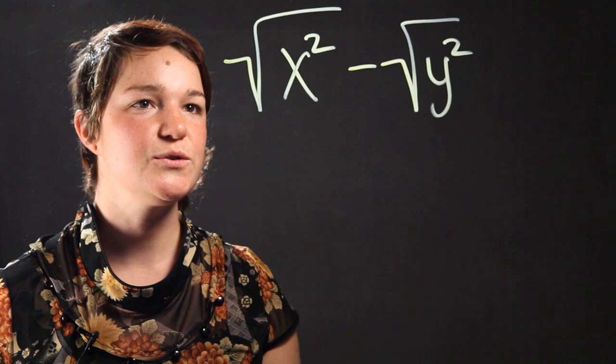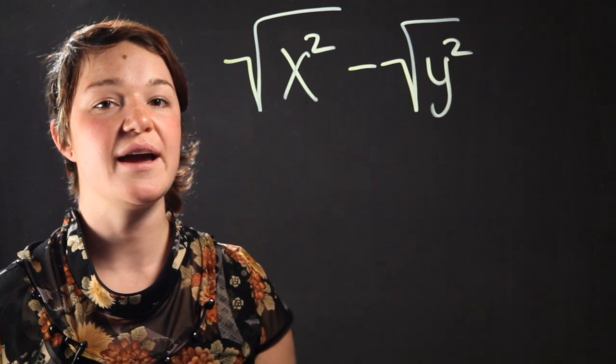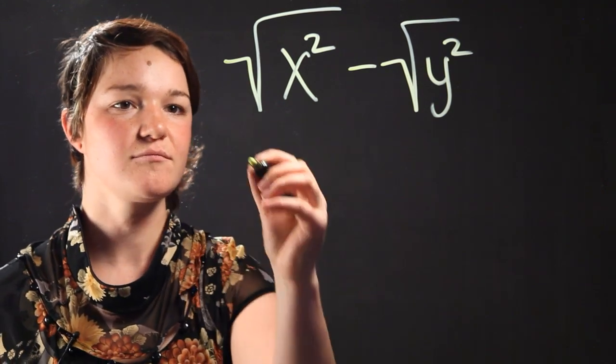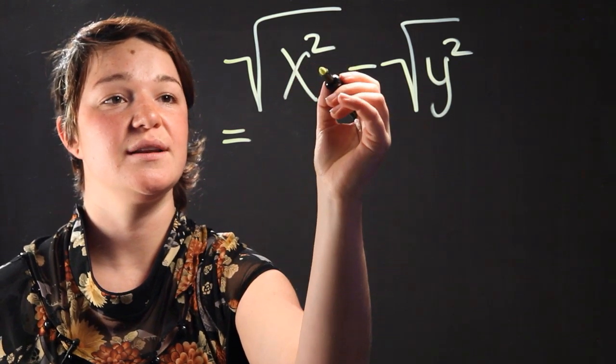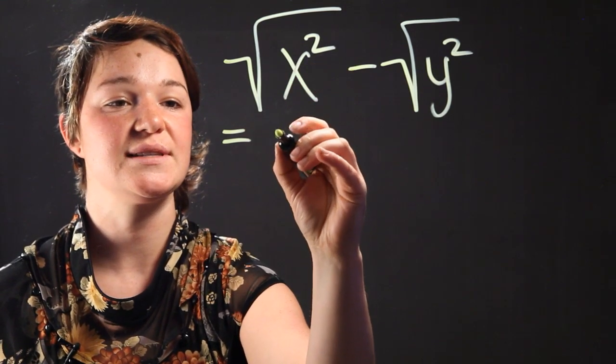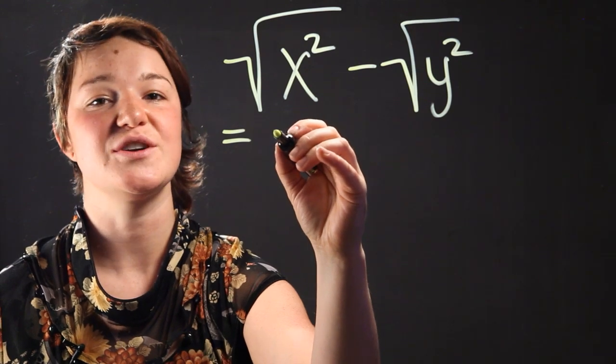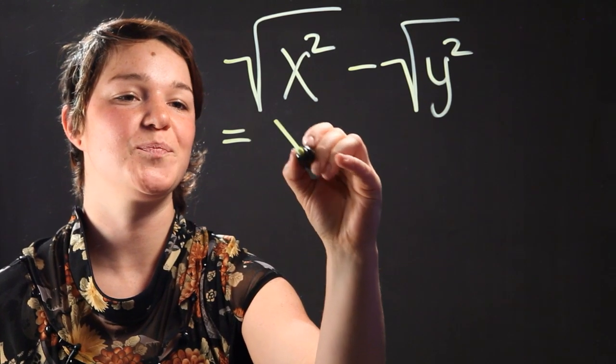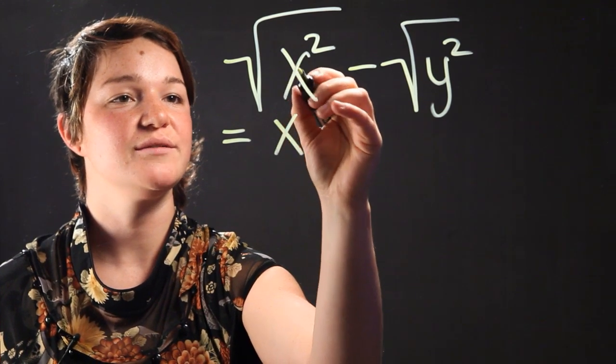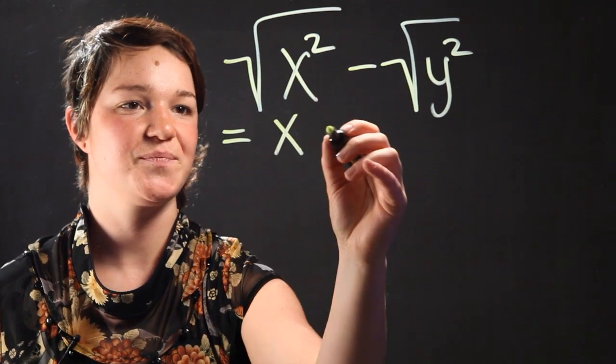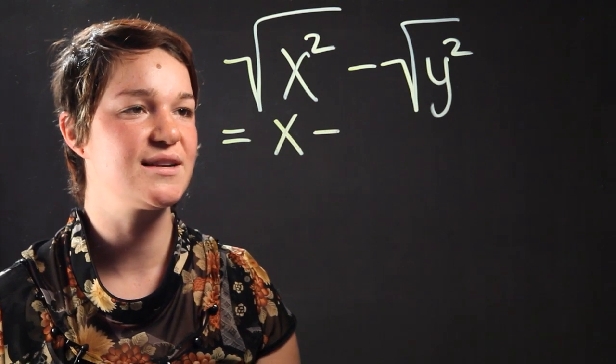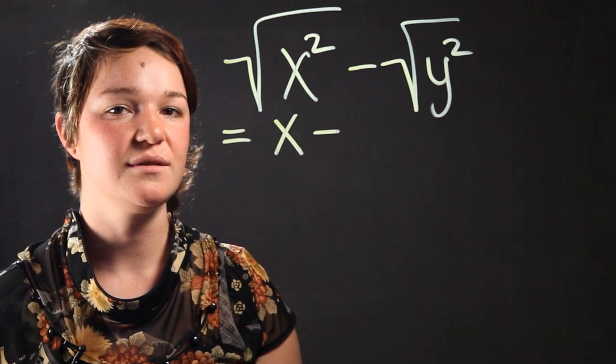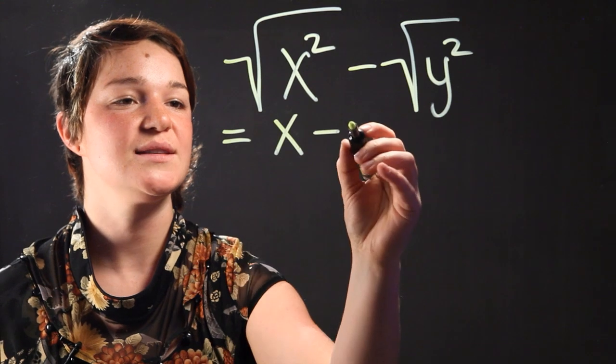So the solution to this would be to simplify our radicals first. We know that the radical of a squared number is just the variable itself. So the radical of x squared is x. Because we have another perfect square within a radical, we can simplify that as well. So the radical of y squared is y.